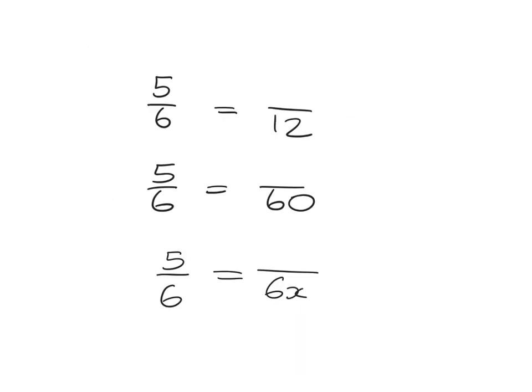Here are a few to try for yourself — see if you can fill in the missing pieces. Pause the video and try it. The answers: you saw that the denominator was multiplied by 2 to get 12, so multiply the numerator by 2 as well — ten-twelfths is equivalent to five-sixths. For the next one, the denominator was multiplied by 10, so multiply the numerator by 10 to get 50 over 60. And to go from 6 to 6x, multiply by x — so 5x over 6x is equivalent to five-sixths.